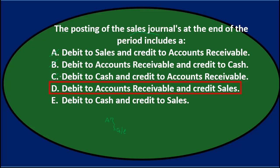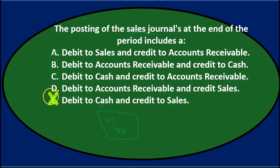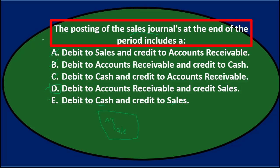D says debit accounts receivable and credit sales — that matches what we expected. E says debit cash and credit sales. That's tricky because crediting sales makes sense, and we could make a cash sale, but it wouldn't go in the sales journal — it would go in the Cash Receipts Journal because cash was received. So D is the correct answer: the posting of the sales journal at the end of the period includes a debit to accounts receivable and credit to sales.